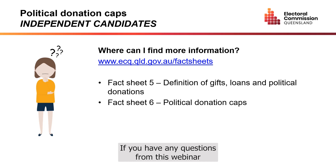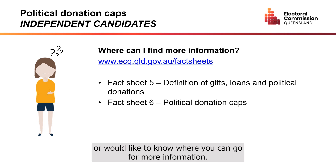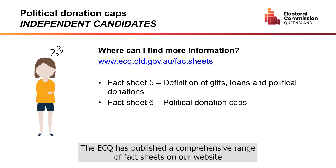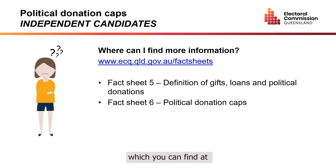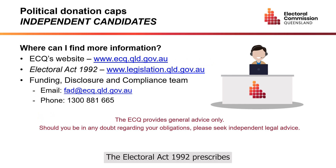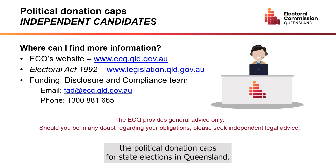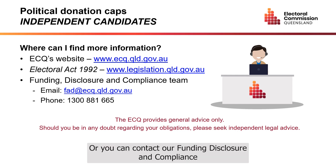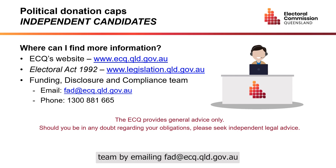If you have any questions from this webinar or you'd like to know where you can go for more information, the ECQ has published a comprehensive range of fact sheets on our website, which you can find at www.ecq.qld.gov.au. You can also have a look at the legislation itself — the Electoral Act 1992 prescribes the political donation caps for state elections in Queensland. Or you can contact our funding, disclosure and compliance team by emailing fad@ecq.qld.gov.au or by calling us on 1300 881 665.